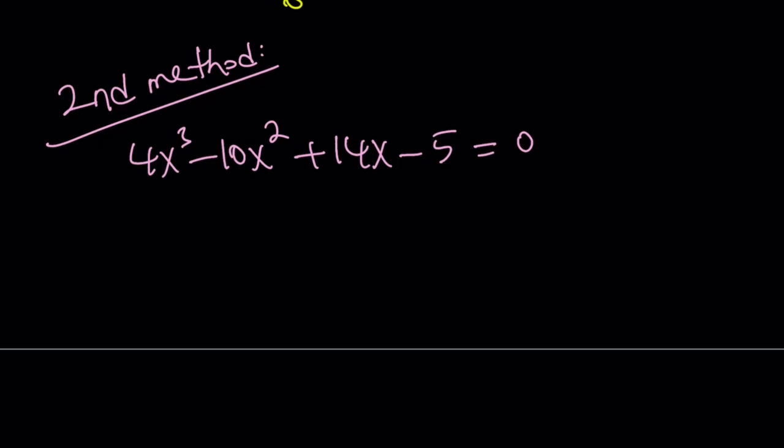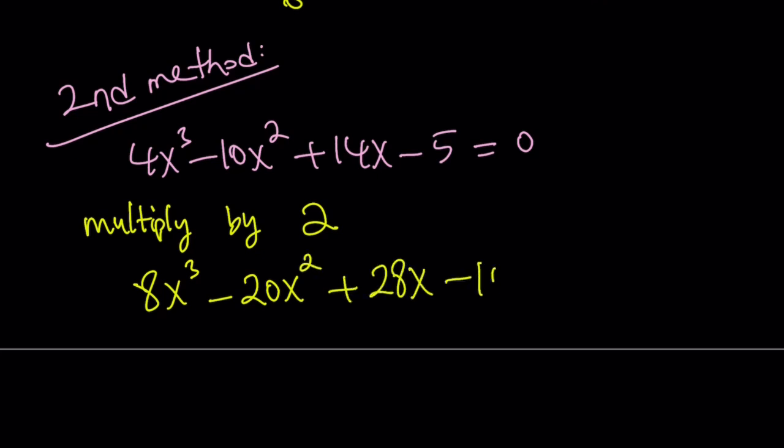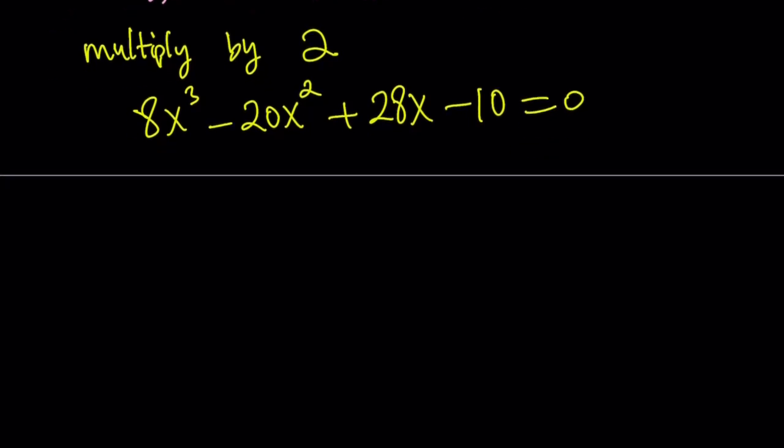So for my second method, I'm going to look at the coefficients carefully. They're pretty much all even numbers, except for the constant, but I don't really care about that. So I care about the coefficient of x cubed, which is four. And I'm thinking, if I double this, I'm going to get eight x cubed, which is nice, because eight is a perfect cube. Perfect. Let's go ahead and do it. So multiply by two, both sides. You get eight x cubed minus 20 x squared plus 28 x minus 10 equals zero. All the coefficients are even now. The constant, again, doesn't really matter much.